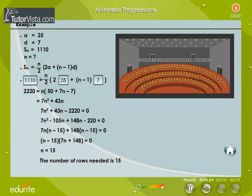We reject the negative value. We find that 15 rows are needed to seat 1,110 people in the auditorium.